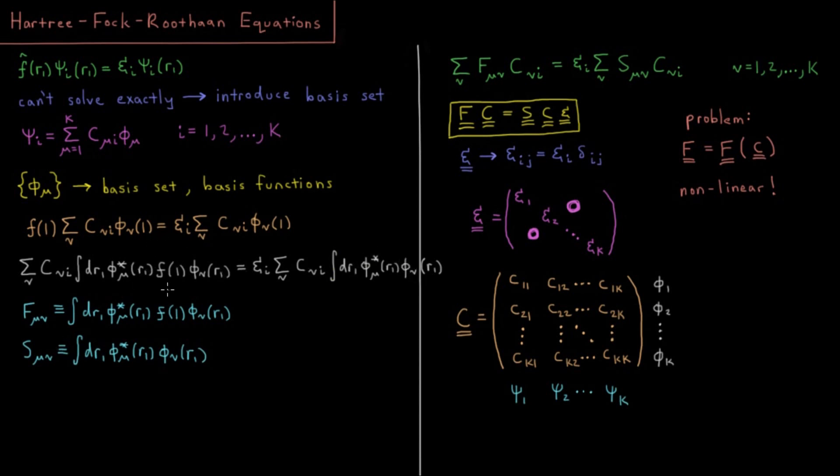To deal with this, we're going to define two new matrices. We're going to define what we call the Fock matrix, F mu nu, which is defined as the integral of phi mu star F phi nu. And we're going to define the overlap matrix of these basis functions, which is defined as the integral of phi mu star phi nu.